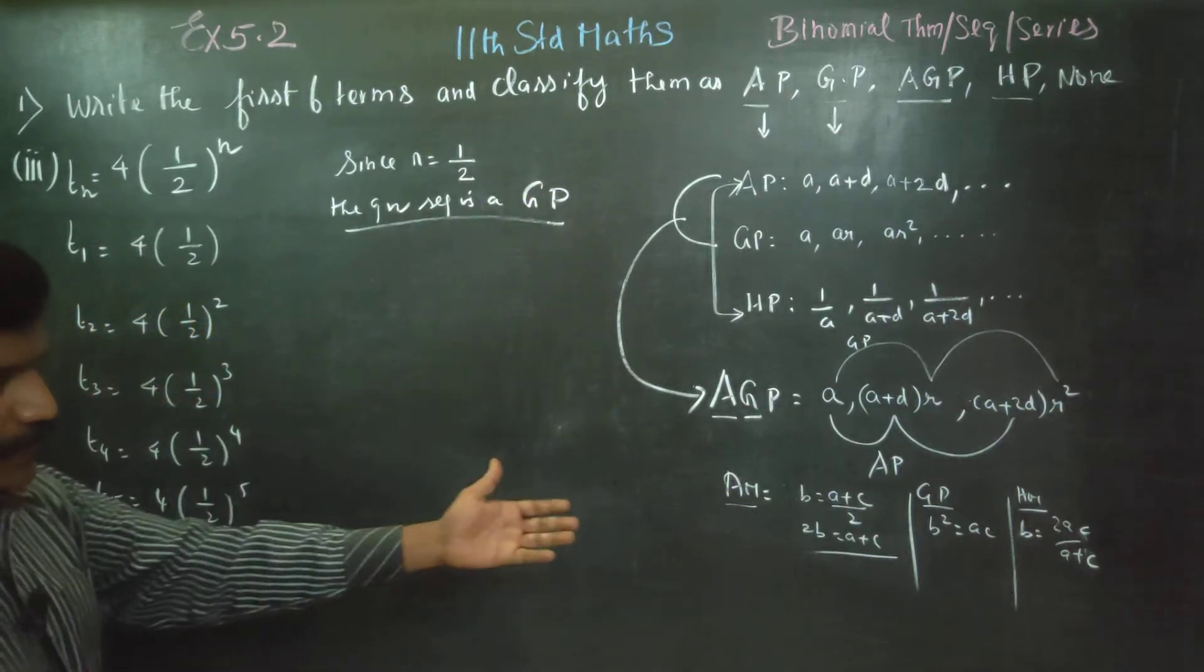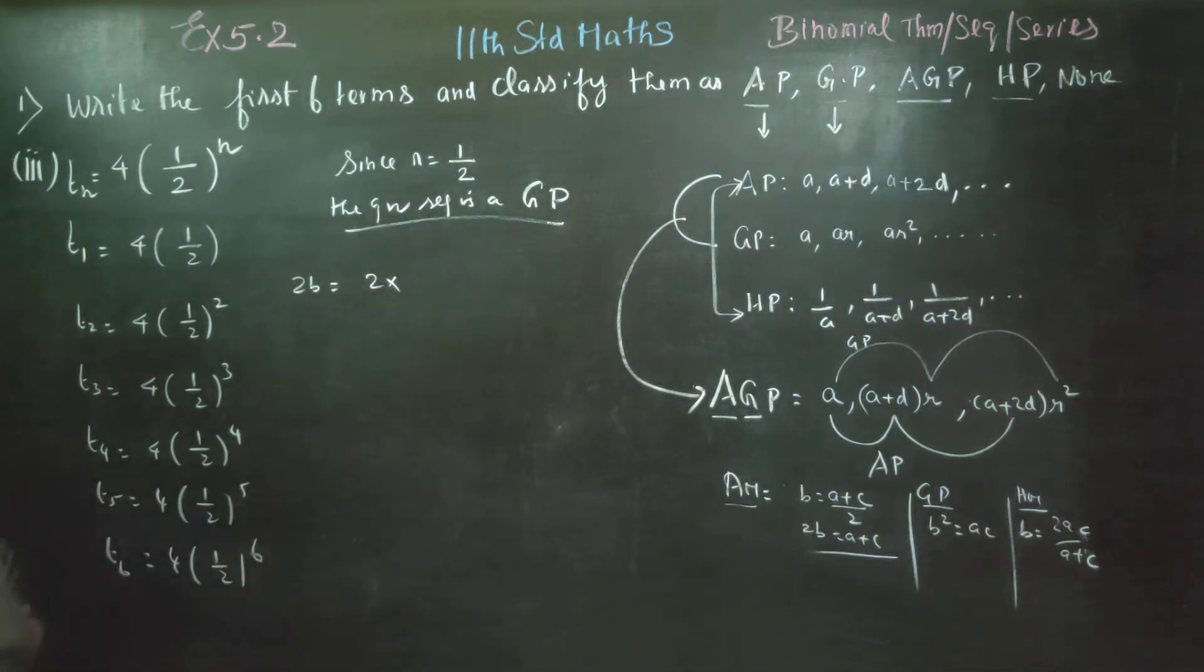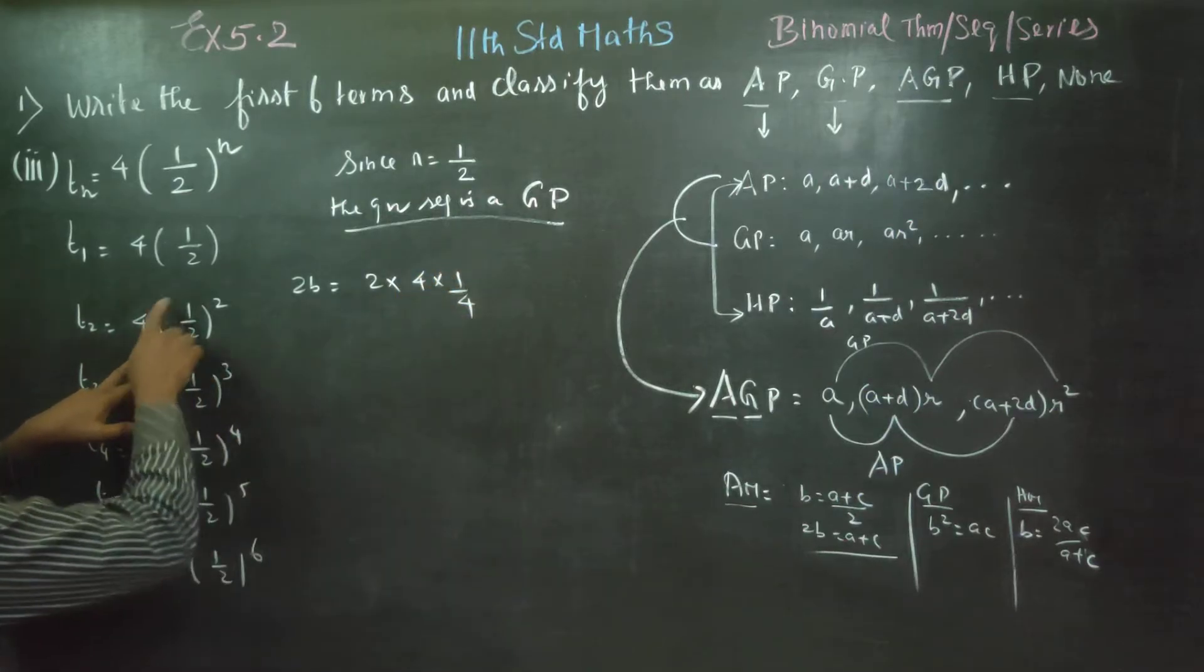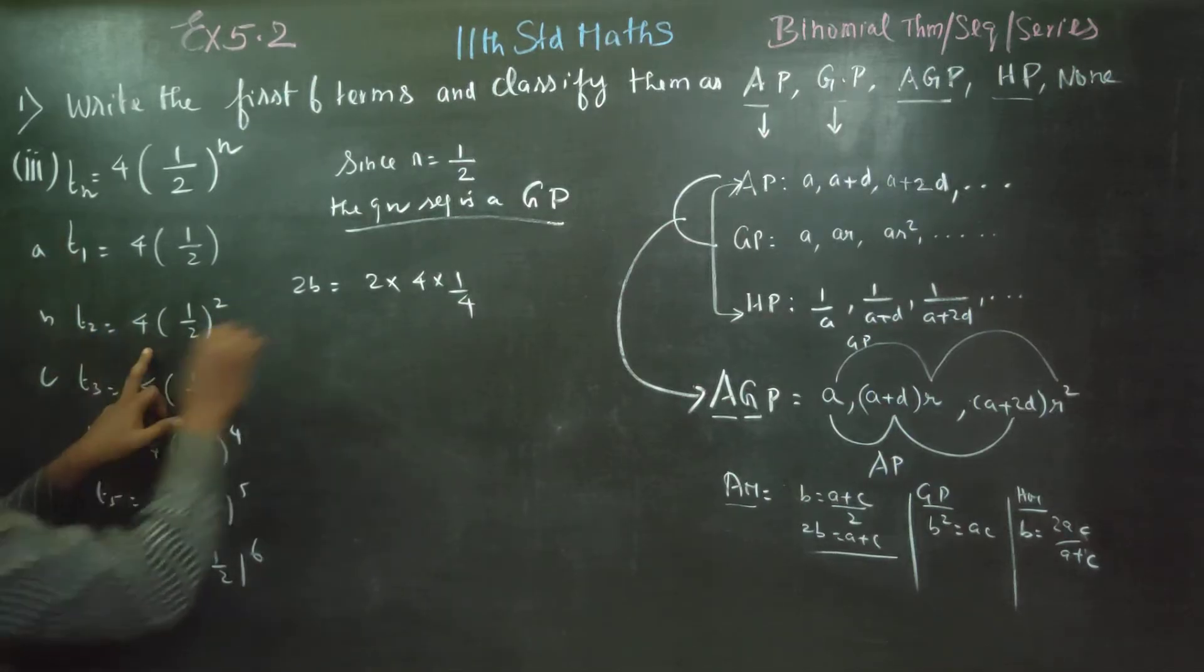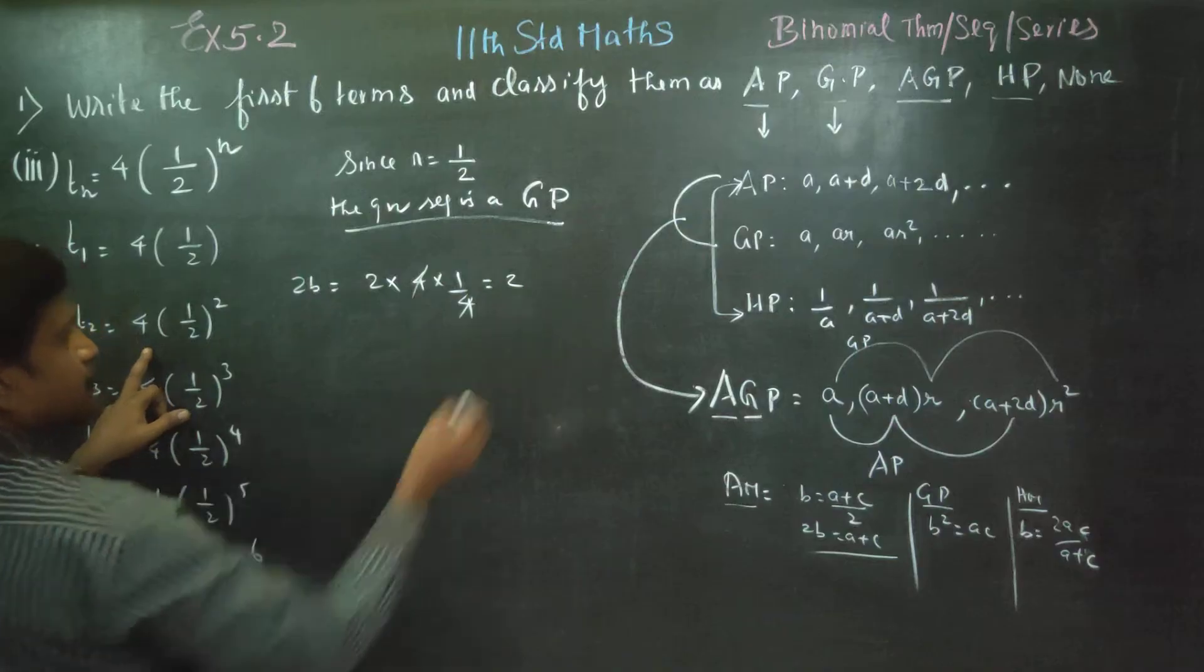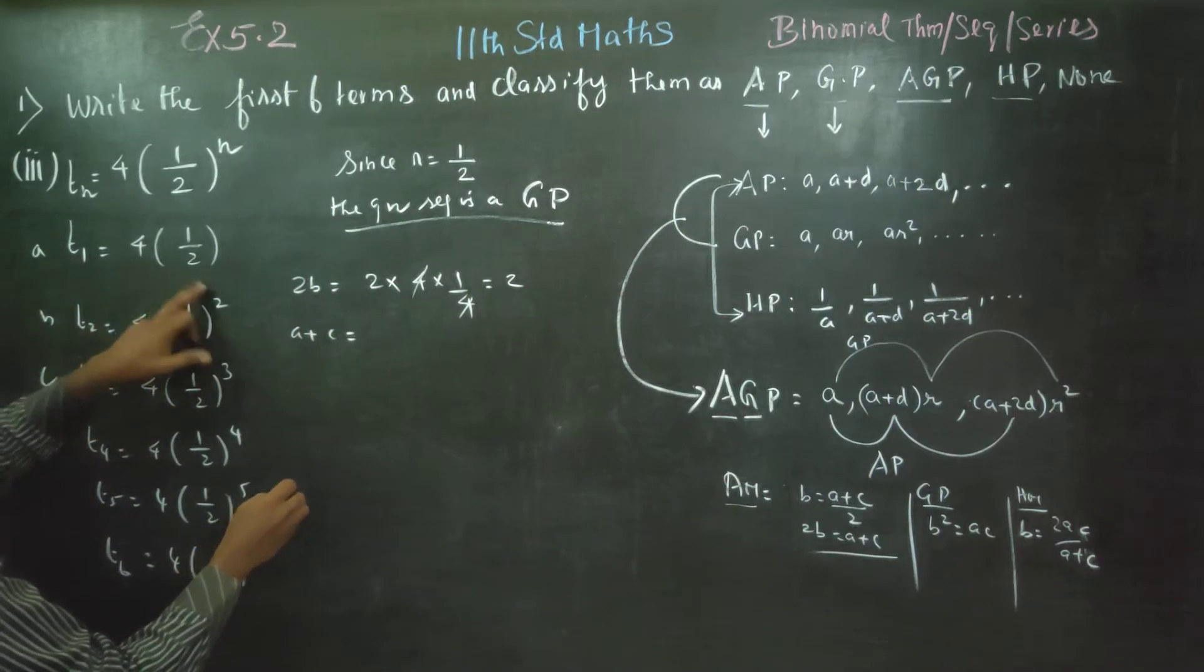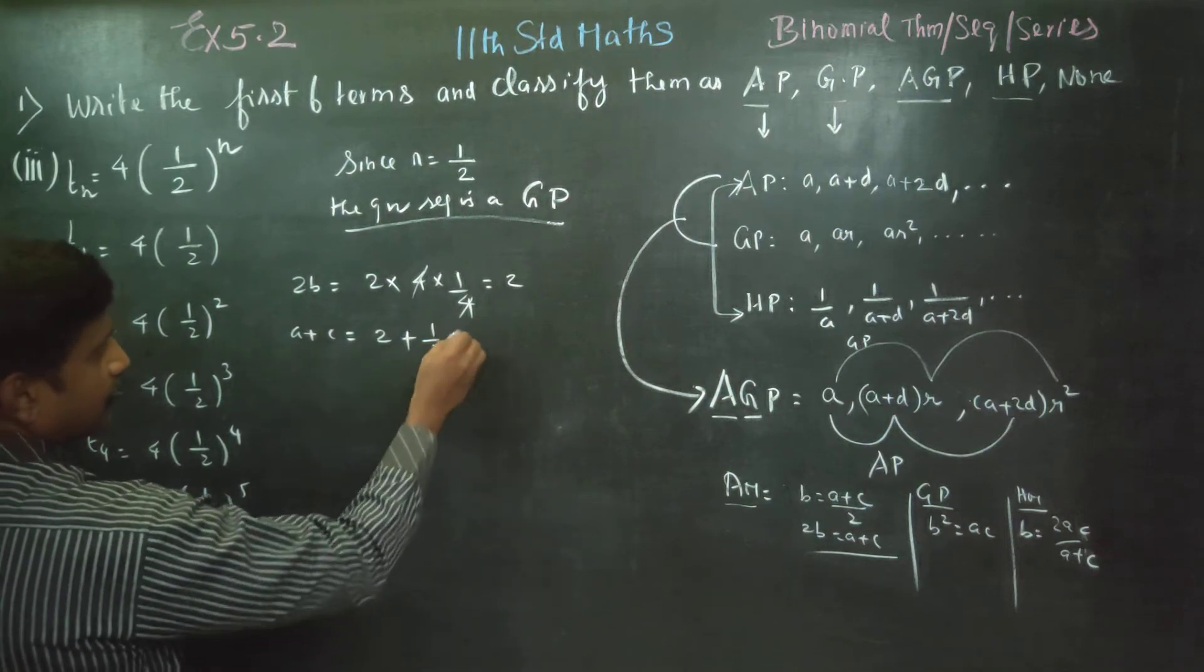Now check. If you check, 2B: 2 into what is my B? 4 into 1 by 4, I write 4 into 1 by 4. 2 times B, this is A, this is B, this is C. Cancel answer 2. What is my A plus C? What is my B? 4 into 1 by 2, cancel 2. 4 into 1 by 2, cancel. 4 into 1 by 8, cancel 1 by 2.